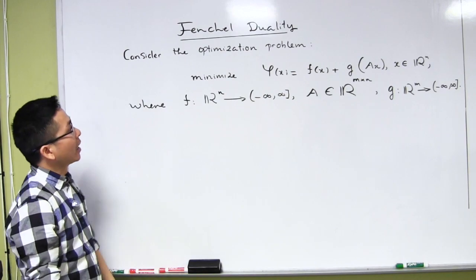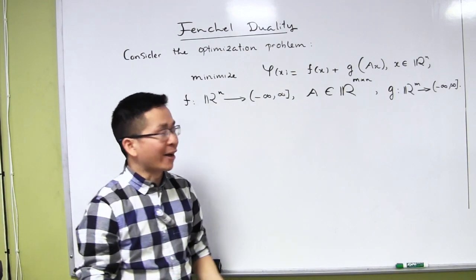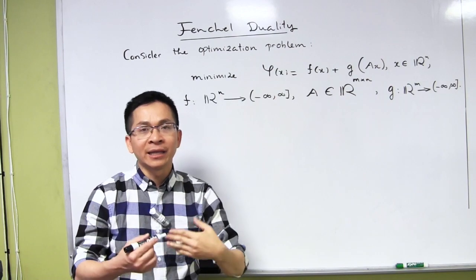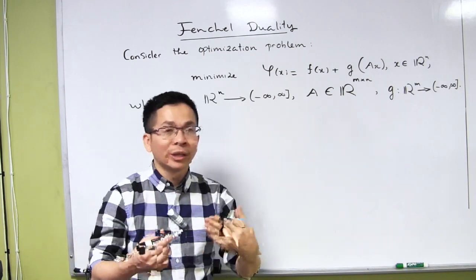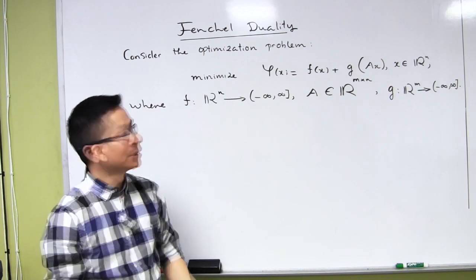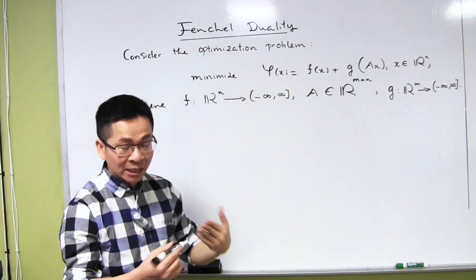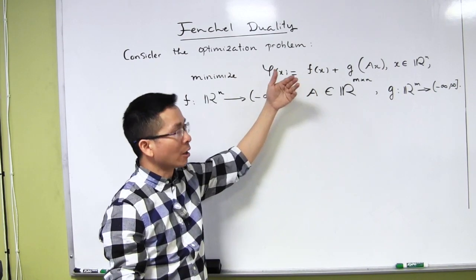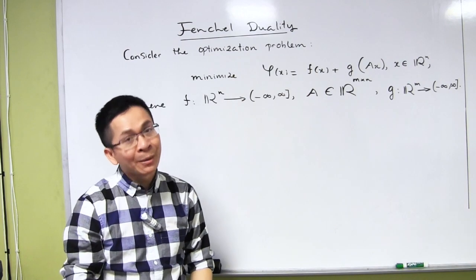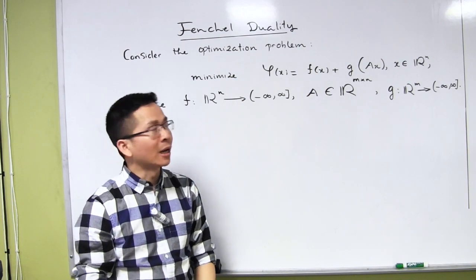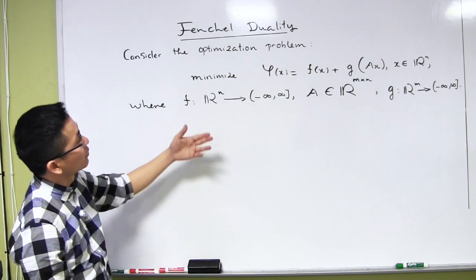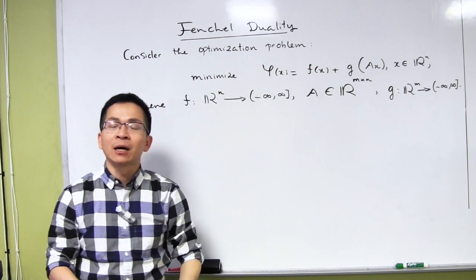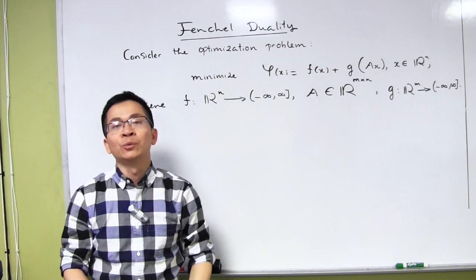We are going to use the tools of Fenchel conjugates to study this problem. Specifically, we are going to define a new problem called the dual problem, with the hope that the dual problem is easier to solve and has a close relationship with the original problem, called the primal problem. We can provide a way to solve the primal problem based on the dual problem.